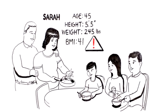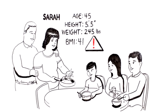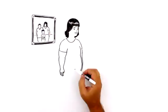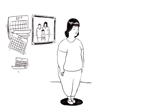That's too high. In fact, anyone with a BMI over 30 has the disease of obesity. Sarah's parents were heavy, and she has always been bigger than her friends. But in the last few years, she has steadily gained weight despite her best efforts.